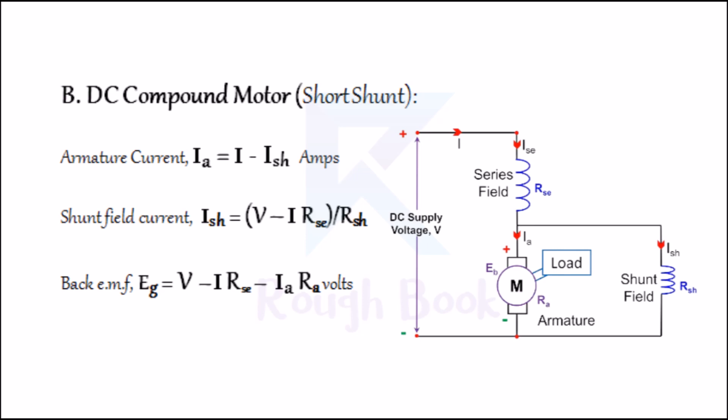13B: Short shunt DC compound motor. From the figure, this is a short shunt DC compound motor, where armature current IA = I − ISH. Shunt field current ISH = (V − I × RSE) / RSH. Back EMF EB = V − I × RSE − IA × RA in volts.